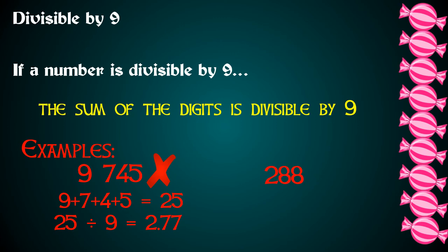What about 288? Let's add up the sum of the digits: 2 plus 8 plus 8 gives us 18. 18 divided by 9 gives us 2, so 288 is divisible by 9.